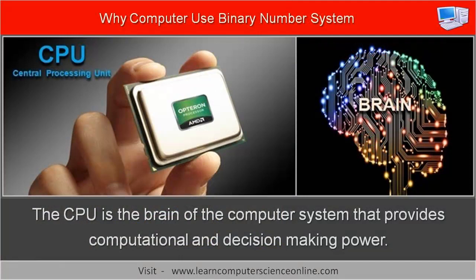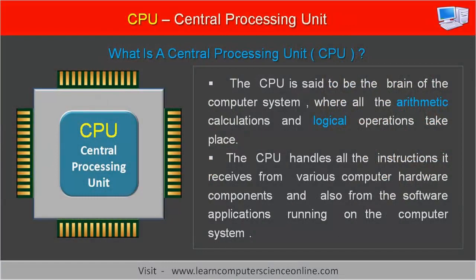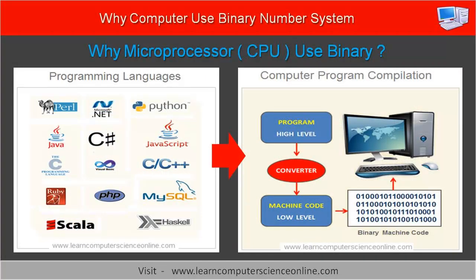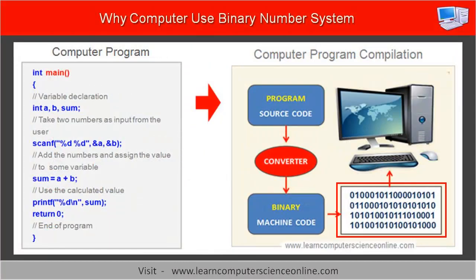The microprocessor is the brain of the computer system, which controls the CPU operations and program execution. The software consists of a set of program instructions executed by the microprocessor, which directs the CPU to perform the desired operations. Computer programs are written using human-friendly high-level programming languages such as C, C++, Java, Python, and many others. However, since the microprocessor executes only binary commands, the high-level computer program also needs to be first converted to machine code instructions in binary.